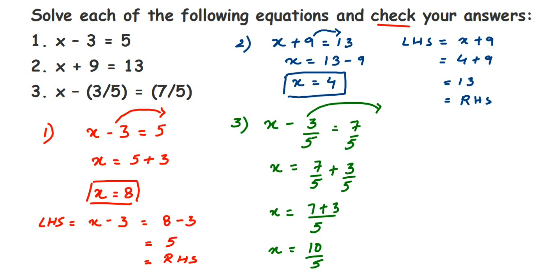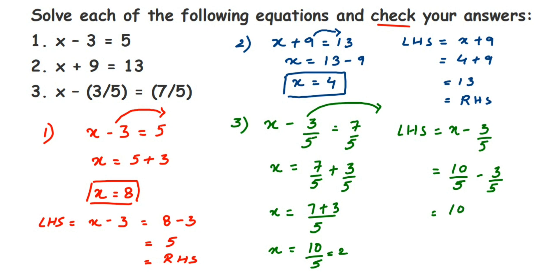To verify: LHS is x minus 3/5, and substituting x equal to 10/5 gives 10/5 minus 3/5. Since the denominators are the same, we subtract the numerators: 10 minus 3 is 7, giving 7/5. This equals the RHS of 7/5, so LHS equals RHS and our answer is correct.